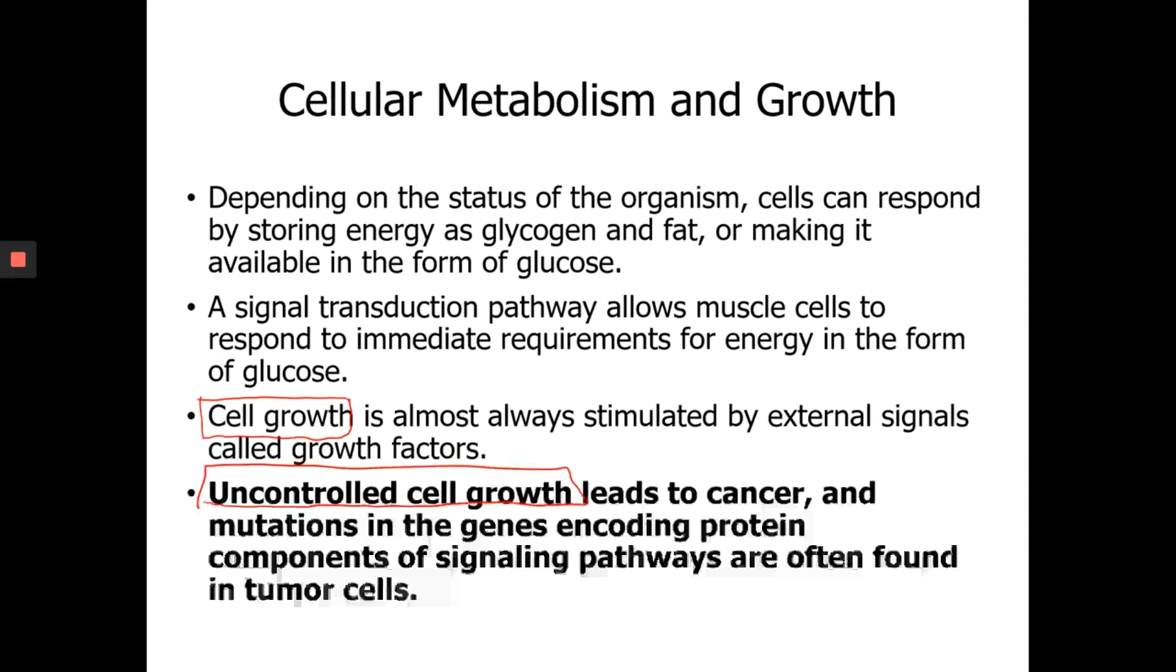A lot of times the cancer cells, why they become cancer cells is because they have mutations in their genes. These mutations can affect the signaling pathways, which make those cells immortal and they just keep dividing.